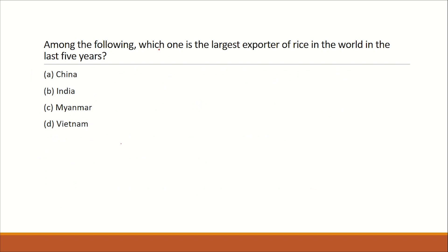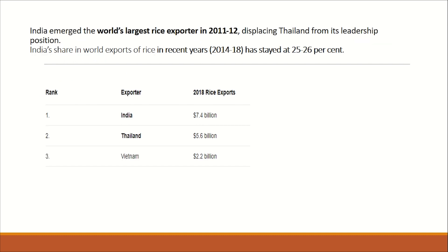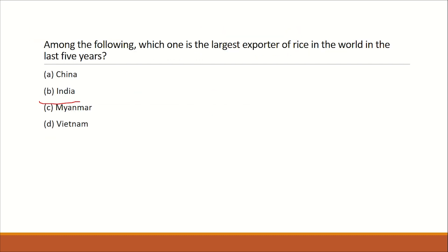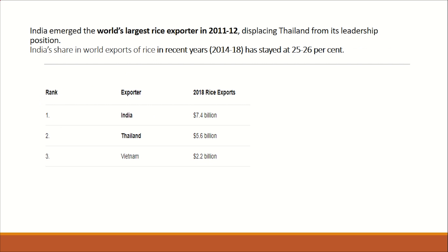Which one is the largest exporter of rice in the world in the last 5 years? The answer is India. India is the largest exporter of rice, with a share of around 25–26% of world rice exports since 2014–18. The second largest exporter is Thailand and the third is Vietnam.